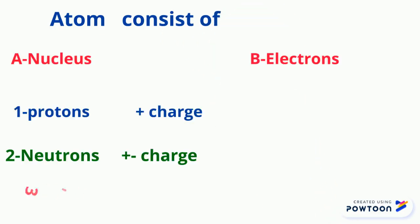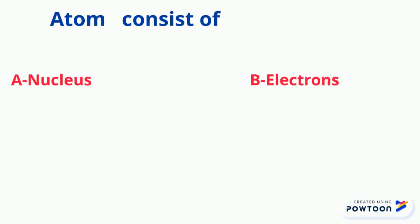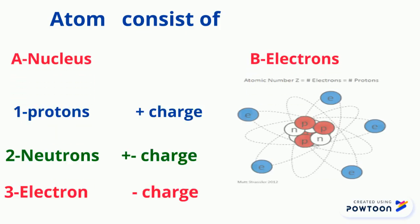The two main parts are the nucleus and electrons. The nucleus is in the center and electrons revolve around it. Inside the nucleus there are two particles: protons, which carry a positive charge, and neutrons, which carry a neutral charge. The last particle is the electron, which has a negative charge. This is what we have to know about what is inside the nucleus of an atom.